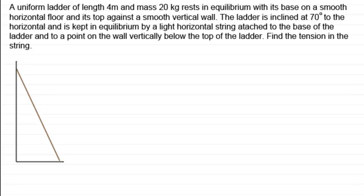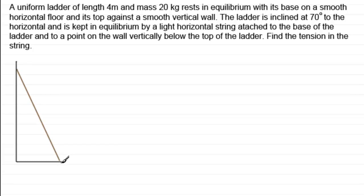Welcome to this video in my series on equilibrium of a rigid body, looking at ladders. In this video we've got a uniform ladder of length 4 meters and mass 20 kilograms. It rests in equilibrium with its base on a smooth horizontal floor and its top against a smooth vertical wall. The ladder is inclined at 70 degrees to the horizontal and is kept in equilibrium by a light horizontal string attached to the base of the ladder and to a point on the wall vertically below the top. We need to find the tension in the string.